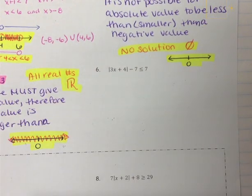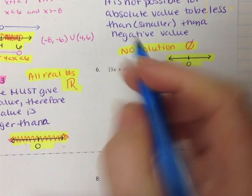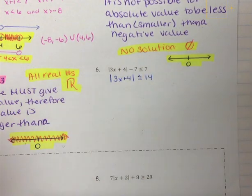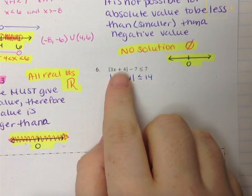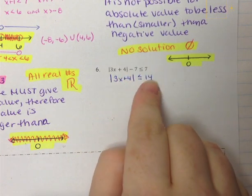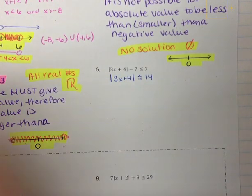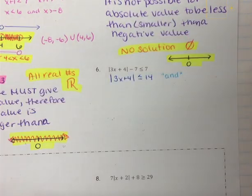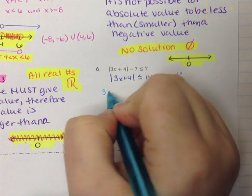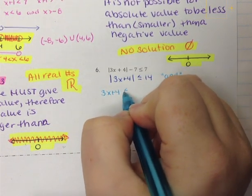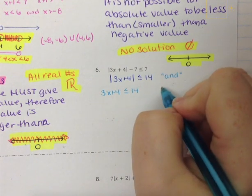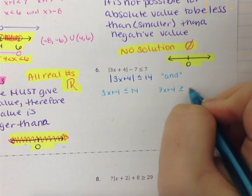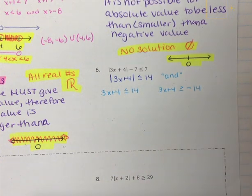In example 6, we isolate the absolute value by adding 7 to the other side, giving the absolute value of 3x plus 4 is less than or equal to positive 14. The absolute value is now isolated. Can a positive number be smaller than 14? Yes, so we continue. The inequality is less than or equal to, which is an and inequality. We separate them: 3x plus 4 is less than or equal to positive 14, and 3x plus 4 is greater than or equal to negative 14, flipping the inequality.